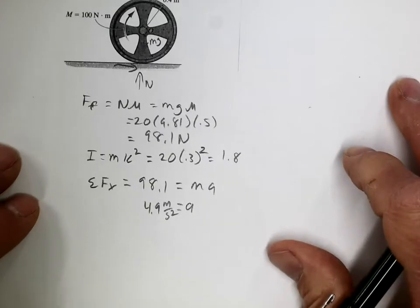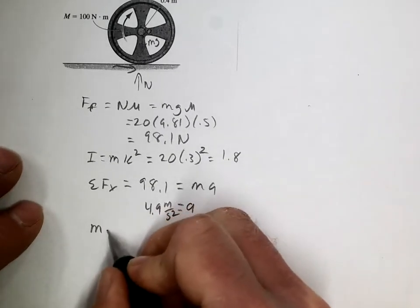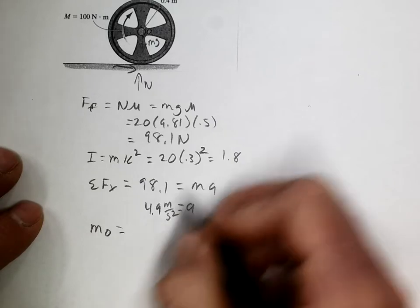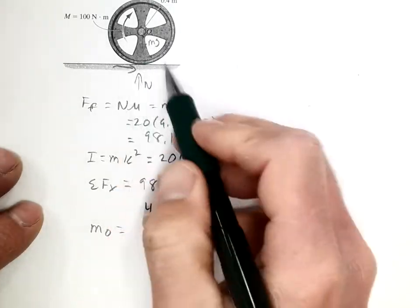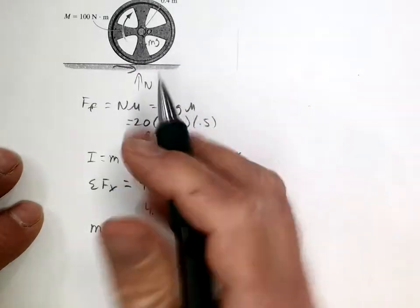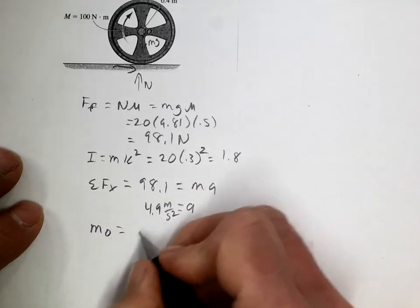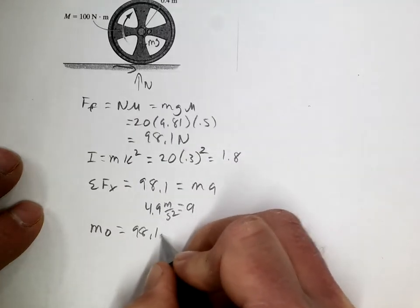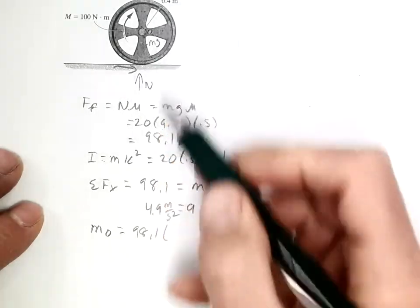And finally, for the moment, if we sum the moments about the center, we have the force of friction causing a moment about the center, so that's causing a positive rotation. So 98.1 times the radius of 0.4,